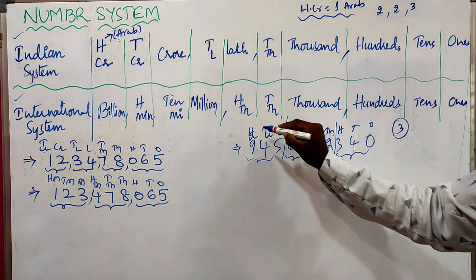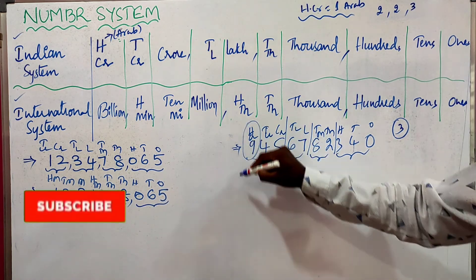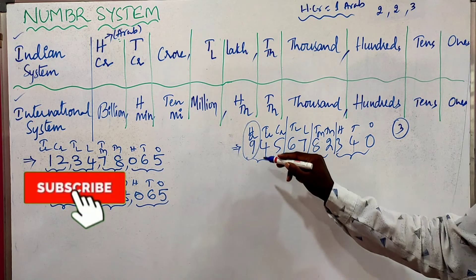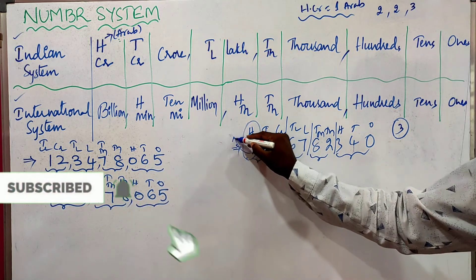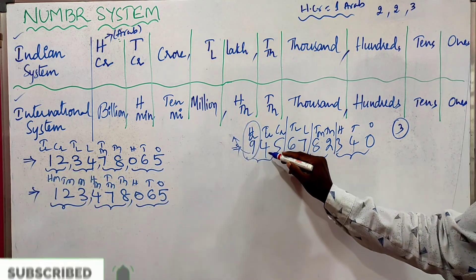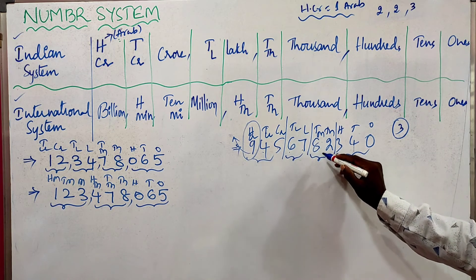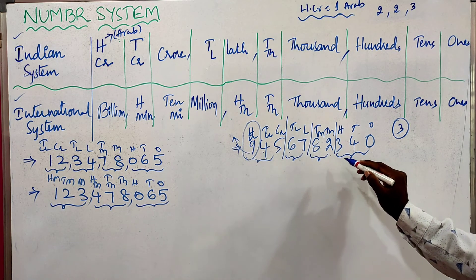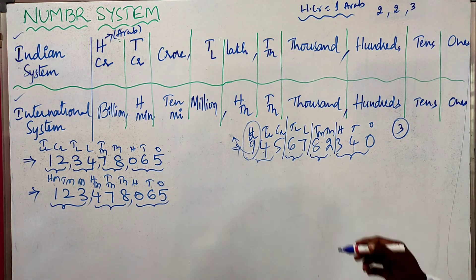We can also split this number using Arab. When you convert to Arab, it indicates 9 Arab, 45 crores, 67 lakhs, 82,340.